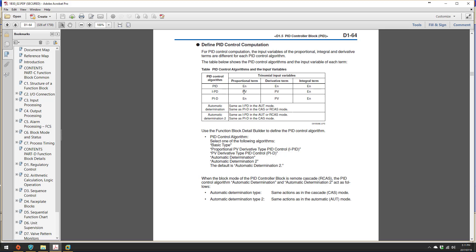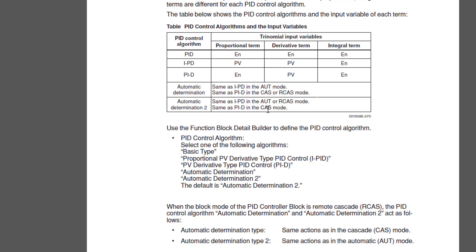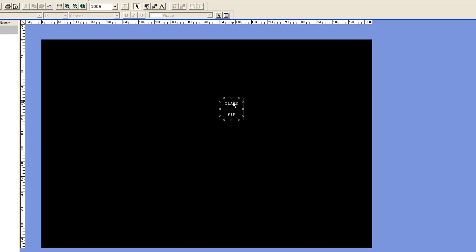The default is automatic determination type 2. Read this very carefully: it says that when in cascade mode the block will behave as a PI-D, otherwise it will behave as an I-PD. So if you have a flow loop which is a slave and you take it into auto, it's going to behave in an I-PD fashion, and the minute you place it into cascade it's going to behave in a PI-D fashion. This is the default setting.